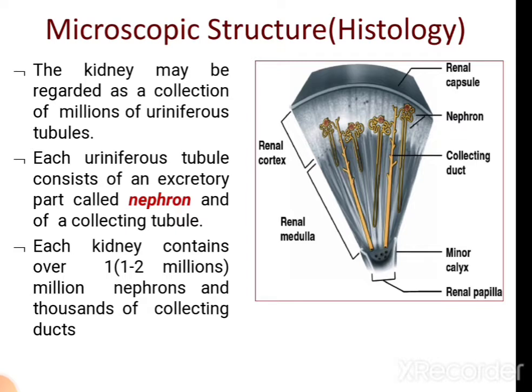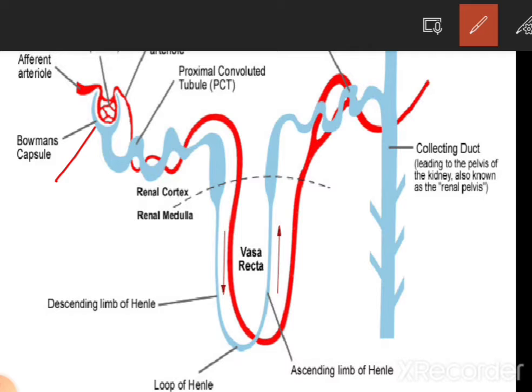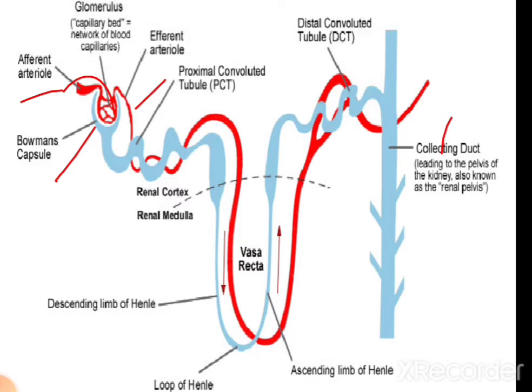The microscopic structure of the kidney shows that the kidney is made up of millions of uriniferous tubules known as nephrons. Each kidney contains about one million nephrons and thousands of collecting ducts. The nephron has a cup-shaped structure known as Bowman's capsule, which is occupied by a network of capillaries called the glomerulus. The glomerulus has two ends: the afferent arteriole, which brings blood towards the nephron, and the efferent arteriole. The next part is the PCT — proximal convoluted tubule — which is highly convoluted and lies in the cortex.